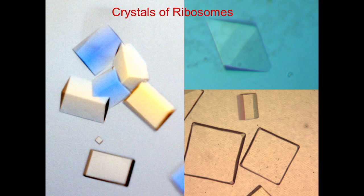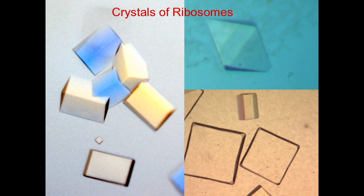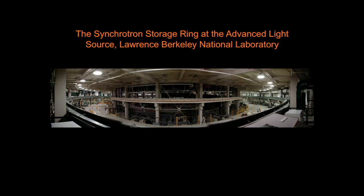In order to figure out the structure, you have to put these crystals in a very powerful X-ray beam because the unit cells are very large. We use an instrument about the size of a football field called the synchrotron. This is the storage ring at the Advanced Light Source at Lawrence Berkeley Laboratory where we collected our very first data. This shows Marat Yusupov, now in Strasbourg, mounting a crystal in the goniometer at the beam line.